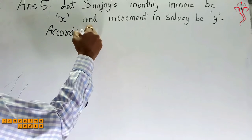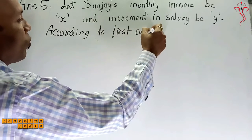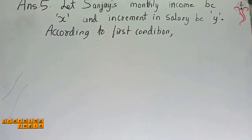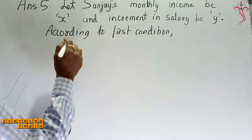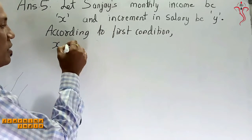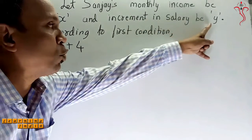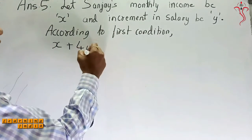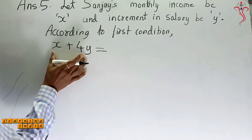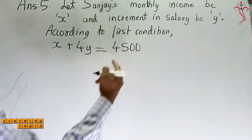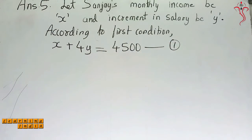According to the first condition, after 4 years his monthly salary was 4500. So after 4 years, his income was 4500. The monthly salary is X, and after 4 years the increment is 4Y. So after 4 years, X plus 4Y will equal 4500.